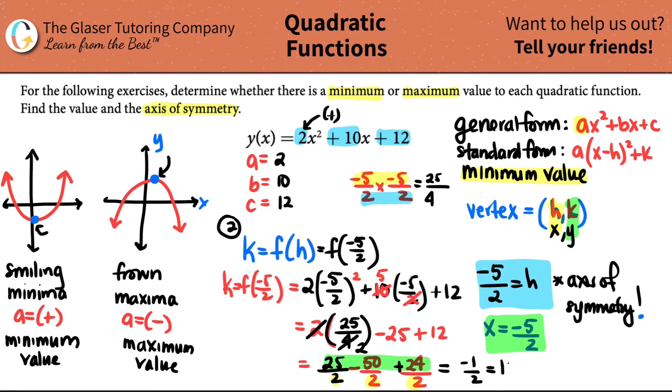And that's your k value. This is your value of your minimum here. So this is your min value. So find the value. The value is -1/2, and the axis of symmetry was x = -5/2. Remember the value is the k value, and the axis of symmetry is really the h value. But when we say that it's an axis of symmetry, you have to say it's x.